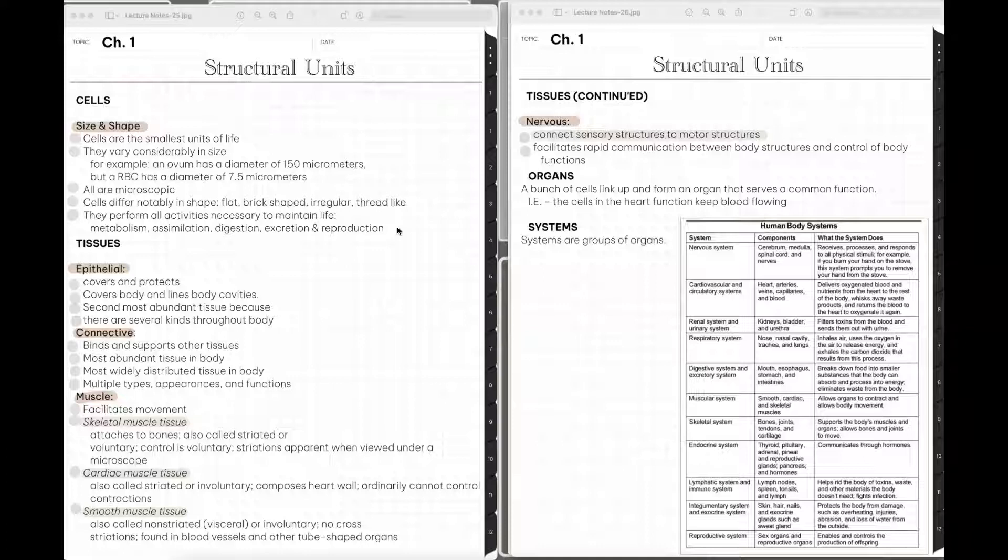You have connective tissue. Connective tissue's job, its primary role is to bind and support other tissues as you might guess from the word connective. It is the most abundant tissue in the body. It is most widely distributed tissue in the body as well. And there are also multiple types of connective tissue and they have different appearances and they have different functions. So depending on what it is that it's connecting, what body parts or structures it's connecting, the appearance and the function will differ.